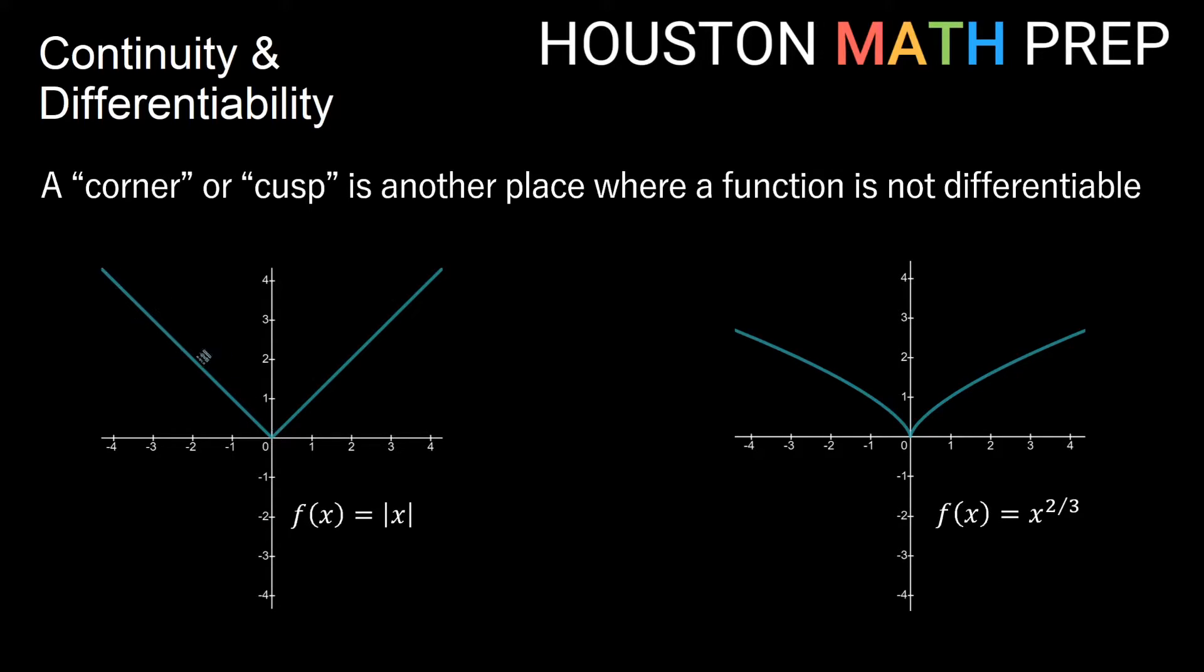And then on this side of the function, our slope is positive. It's actually a positive one slope. But down here, because we have a sharp corner, there's actually no unique single way to draw a tangent line through that point.